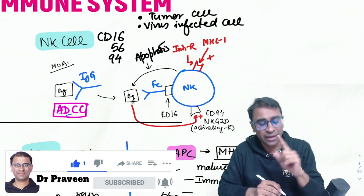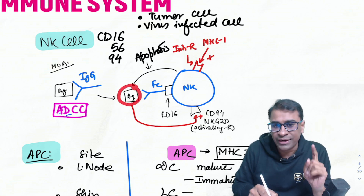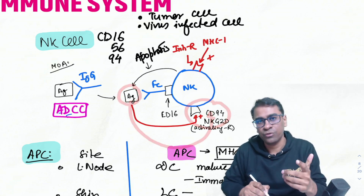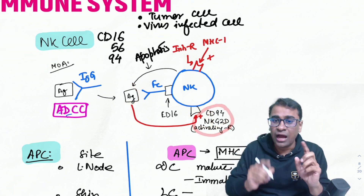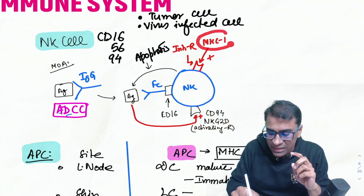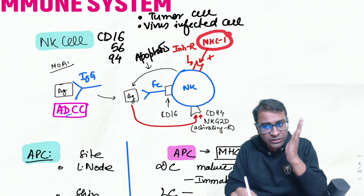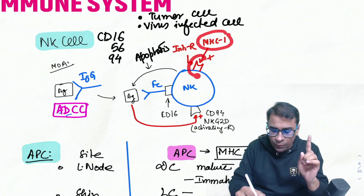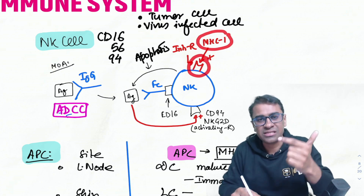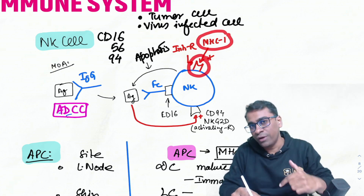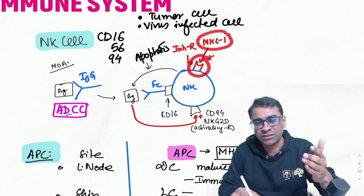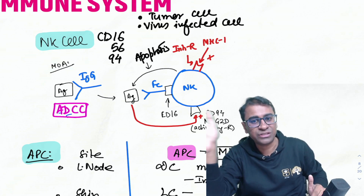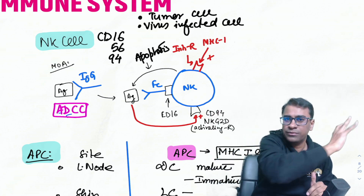An important point: an antigen can only be destroyed if it activates CD94 (NKG2D). However, if the antigen has MHC class 1, MHC1 will activate inhibitory receptors on the NK cell, meaning NK cells cannot destroy any antigen that expresses MHC1.